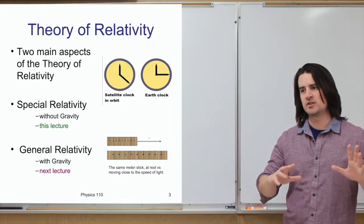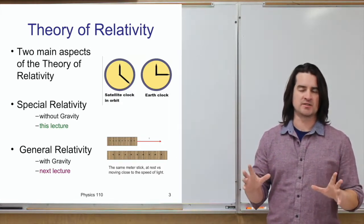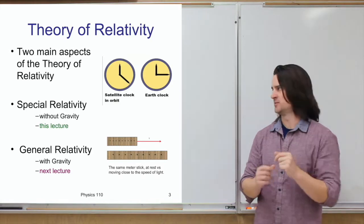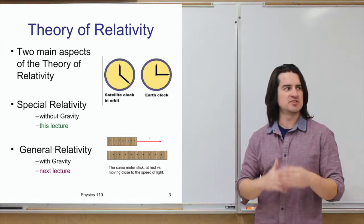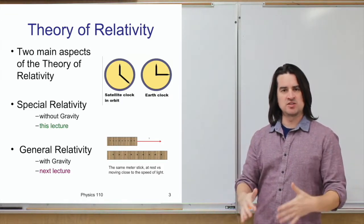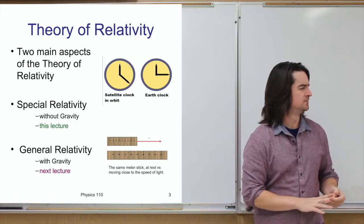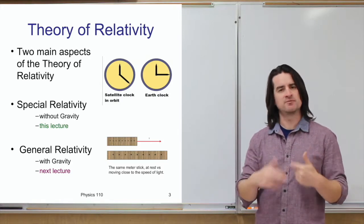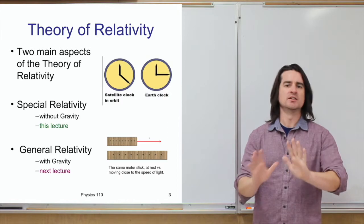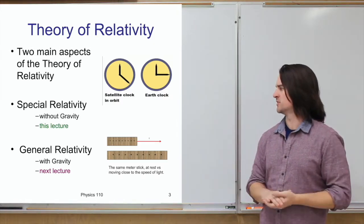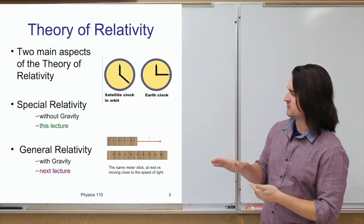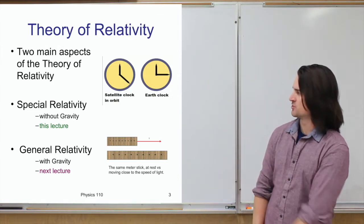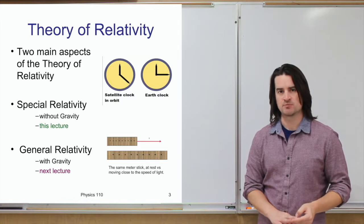Within the theory of relativity, there are really two main aspects. One is what we call special relativity — essentially relativity without gravity and without anything accelerating, since gravity tends to apply forces to things which accelerates them. Then general relativity is essentially with gravity and with things accelerating. This lecture is going to be all about special relativity, and next time we'll talk about general relativity.